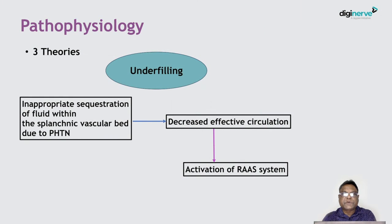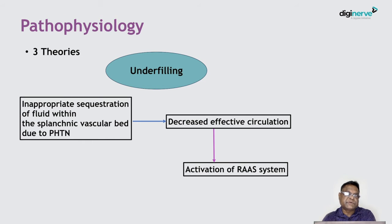Introducing the topic: ascites is a term derived from the Greek word 'ascos,' meaning bag or sac. Ascites is basically a pathological fluid collection within the peritoneal cavity. In a normal healthy male, there is no fluid or very little fluid in the peritoneal cavity, whereas in females, based on the menstrual cycle, there may be around 20 ml of fluid in the peritoneal cavity.